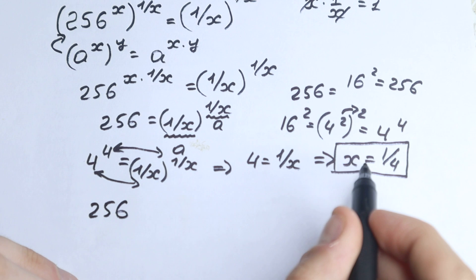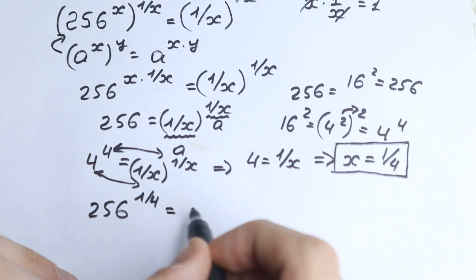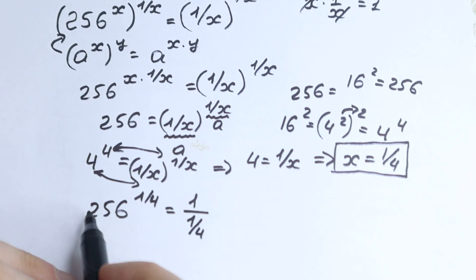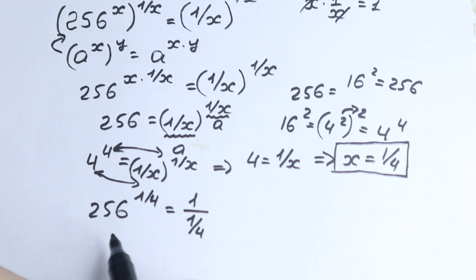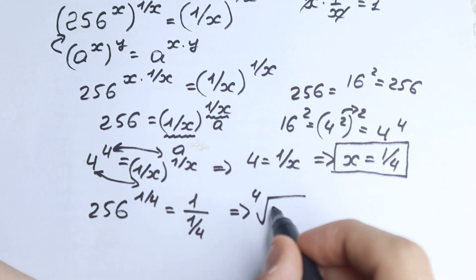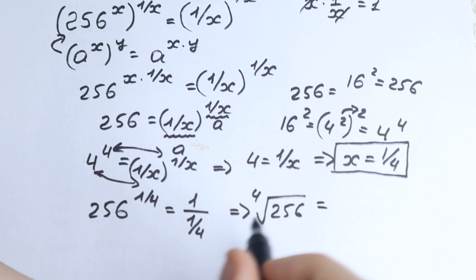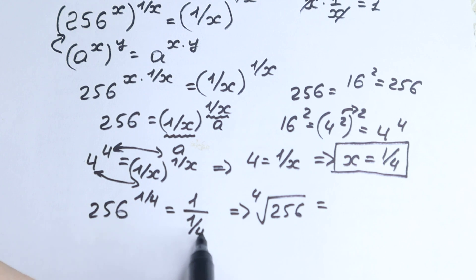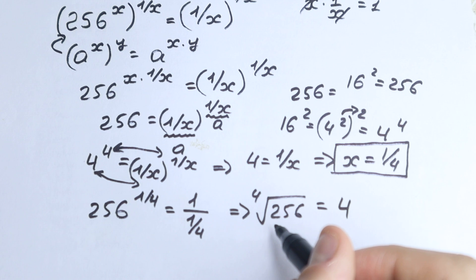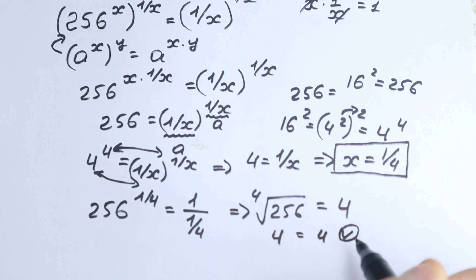We have 256 to the power 1 over 4 equal to 1 over 1 over 4. The left side, 256 to the power 1 over 4, is the fourth root of 256. And 1 over 1 over 4 equals 4. So we have the fourth root of 256 equal to 4. That gives us 4 equals 4, which is absolutely correct. This confirms it is the correct method.